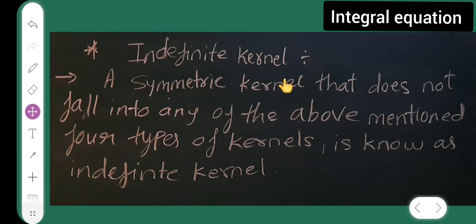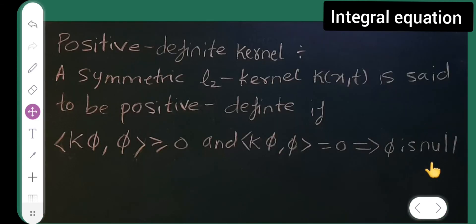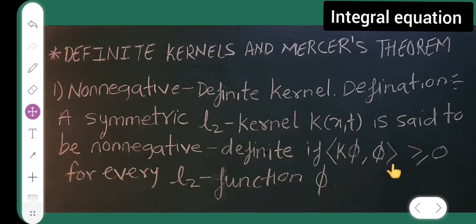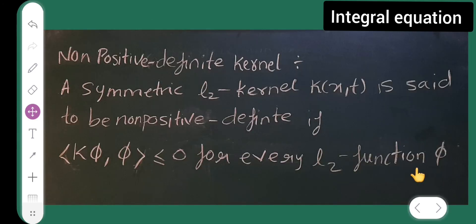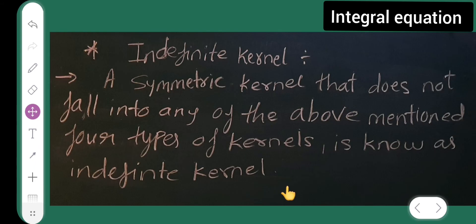Next is indefinite kernel. A symmetric kernel that does not fall into any of the above mentioned four types of kernel is known as an indefinite kernel. So this indefinite kernel is not falling into any of the four definitions of kernel.